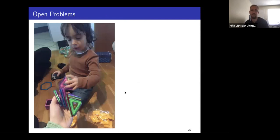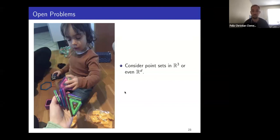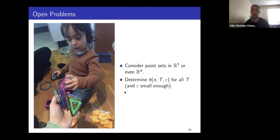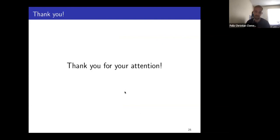I have a few open problems. The first is motivated by my nephew, who is playing with triangular-shaped magnets — he is maximizing ε-similar triangles not in the plane but in R³. So: what happens if you consider R³ instead of the plane, or even Rᵈ? We know better lower bound constructions exist, but our methods fail for the upper bound. The second open problem is to determine this quantity for all triangles, since our theorem holds for almost all triangle shapes and some cases remain open.